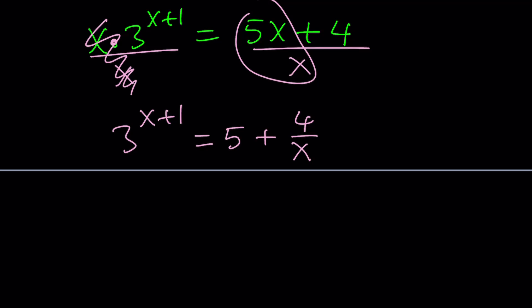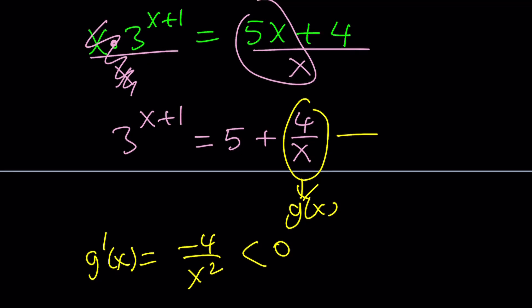Because four over x is a hyperbola, and it's always decreasing. You know why? If you just consider this g of x, call this g of x, and differentiate g of x, that's going to be negative four over x squared. You probably know the derivative of one over x. And this is always negative. Obviously, x equals zero gives us a problem.